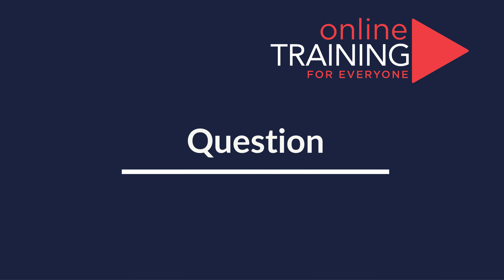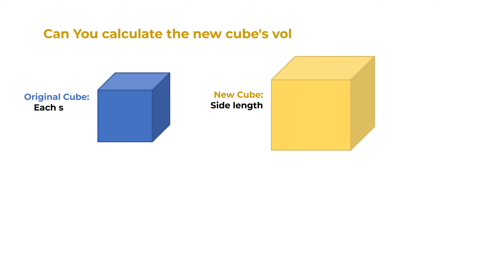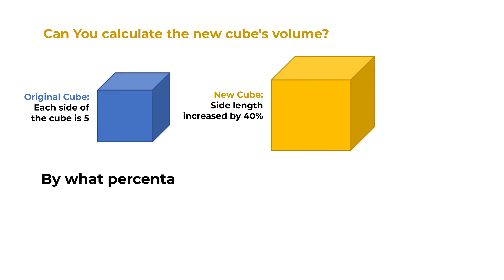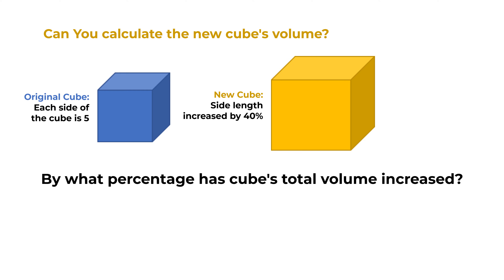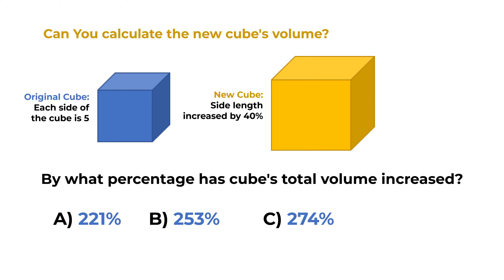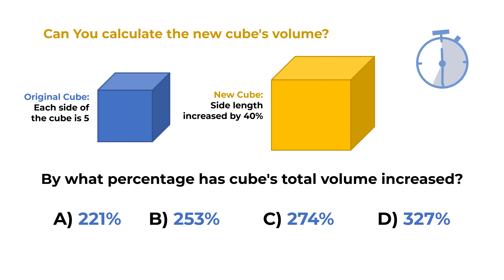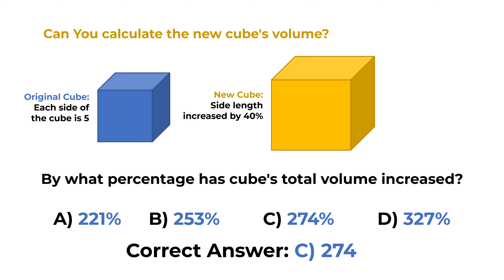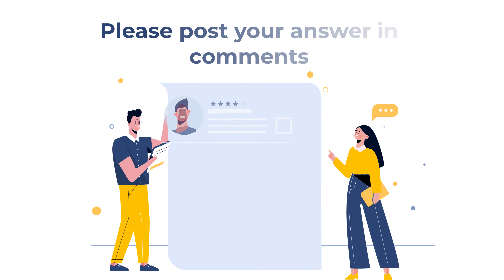Here's a practice problem: a 5x5x5 cube has its side length increased by 40 percent. By what percentage has the cube's total volume increased? You have four choices: A is 221 percent, B is 253 percent, C is 274 percent, and D is 327 percent. Give yourself a little bit of time, because the answer may not be obvious. The answer is choice C, 274 percent.